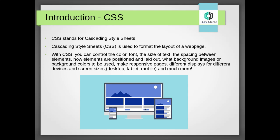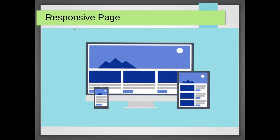You can also set what background images or background colors to use, and make responsive pages as you see in this picture — different displays for different devices and screen sizes. This is for desktop, this is for tablet, and this is mobile. This responsive page can be made with the help of CSS media screens, which we will discuss in later videos in the advanced CSS.